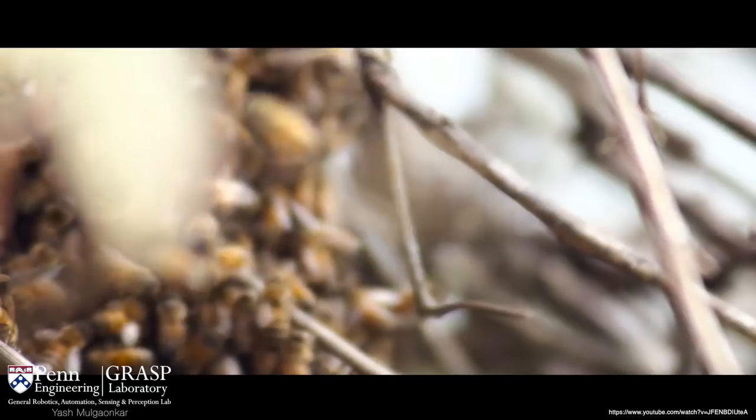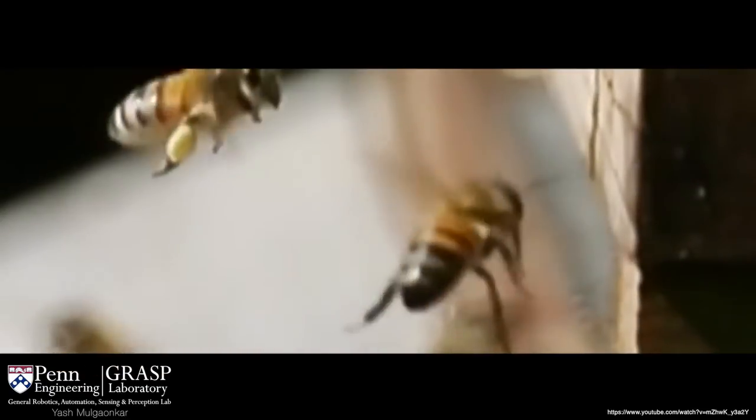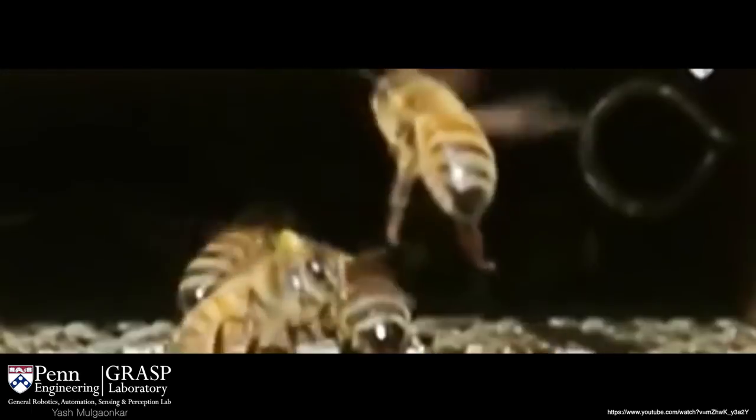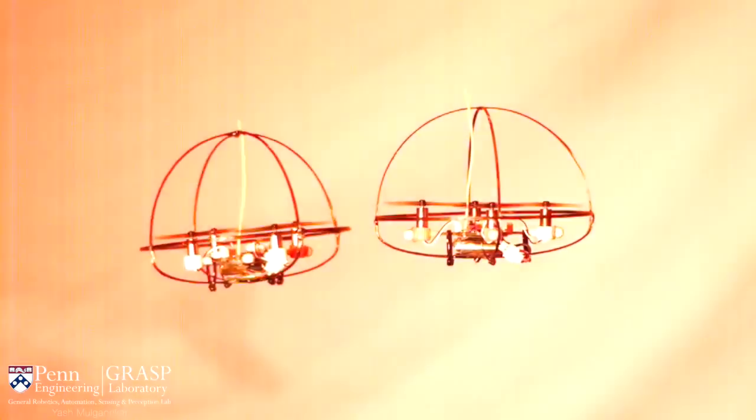As you can see here, honey bees fly in close proximity with each other in large swarms. They are remarkably robust to collisions with the environment and with each other. They are able to bounce off neighbours that get in their way. We are interested in creating robot swarms that exhibit this resilience.